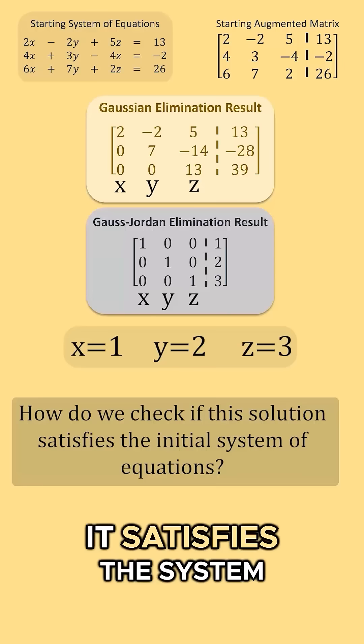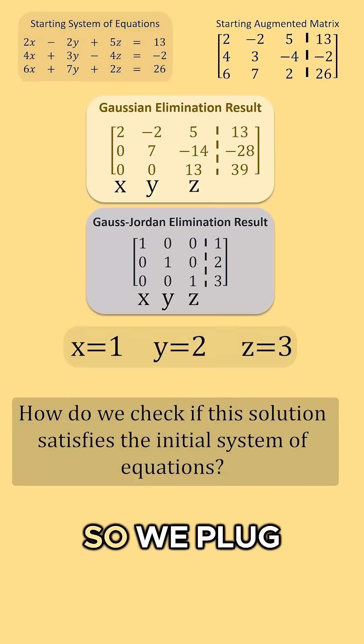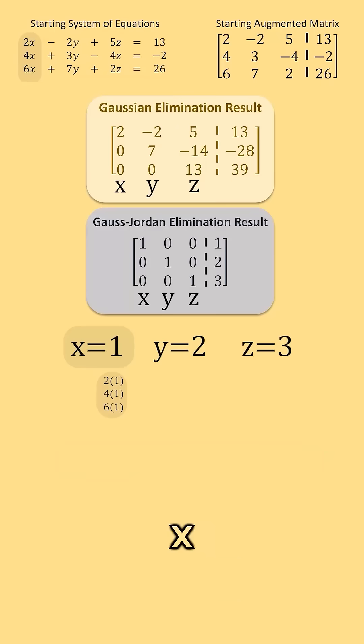To check that it satisfies the system, we plug these three values into the original system of equations. We plug 1 in for x, 2 in for y, and 3 in for z.